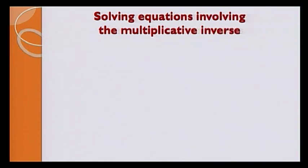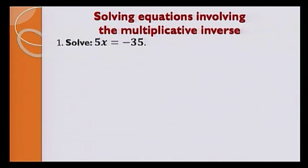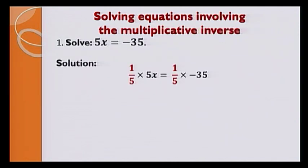Solving equations involving the multiplicative inverse. To eliminate the coefficient 5 in this equation, we need to multiply both sides of the equation by the multiplicative inverse of 5, that is 1 over 5. Multiplying 1 over 5 on both sides, we get x is equal to minus 7.